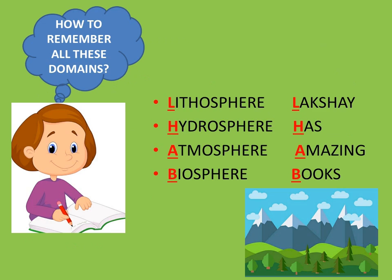To remember all four domains, here is an easy memory trick: 'Lakshay has amazing books.' In Lakshay, L stands for lithosphere; H stands for hydrosphere; in amazing, A stands for atmosphere; and in books, B stands for biosphere. You can also make these kinds of mnemonics or memory tricks by yourself.